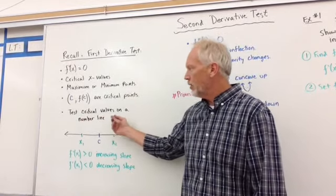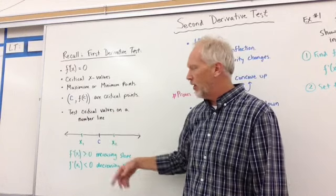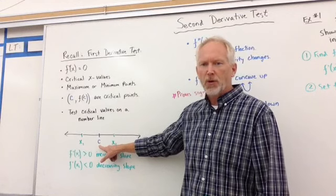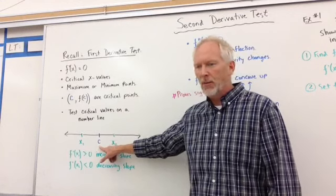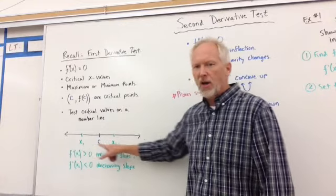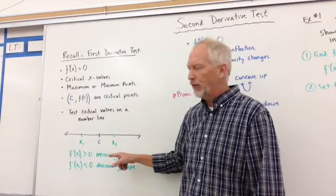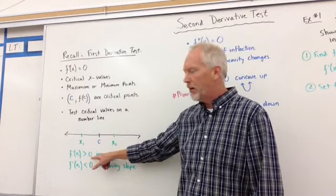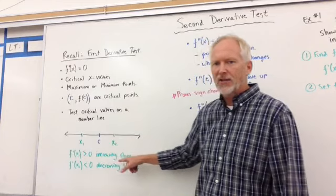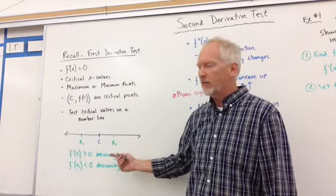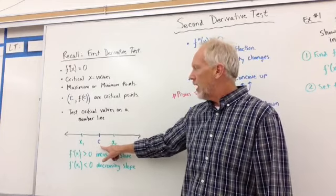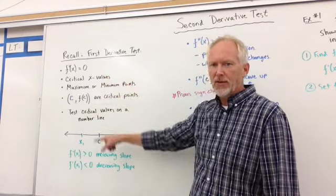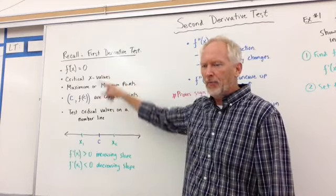So what we do is we test those critical values on a number line. And if we have some c value that is supposed to provide us a maximum or a minimum, then what we do is we test points on either side within an interval. And we say, if f prime of x sub 1 is greater than 0, then it's increasing. So if it's a positive number, if I put x value back into f prime of x and x sub 2 back into f prime of x, then they're going to reveal something.